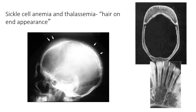This is an example of sickle cell anemia and thalassemia, which gives the appearance of a hair-on-end pattern. It is caused by the superficial surface of the dura being raised, appearing as though there is hair standing on end of the skull. Also characteristic are increased trabecular spaces and wide marrow spaces, which are classical features of sickle cell anemia and thalassemia.